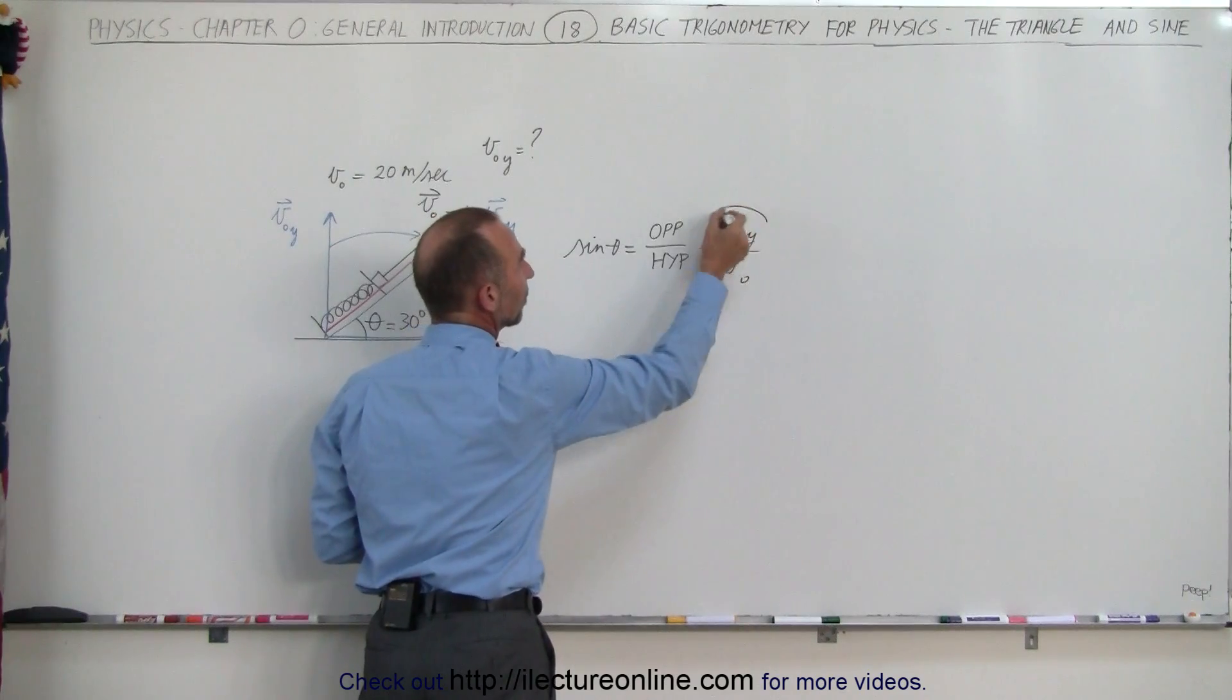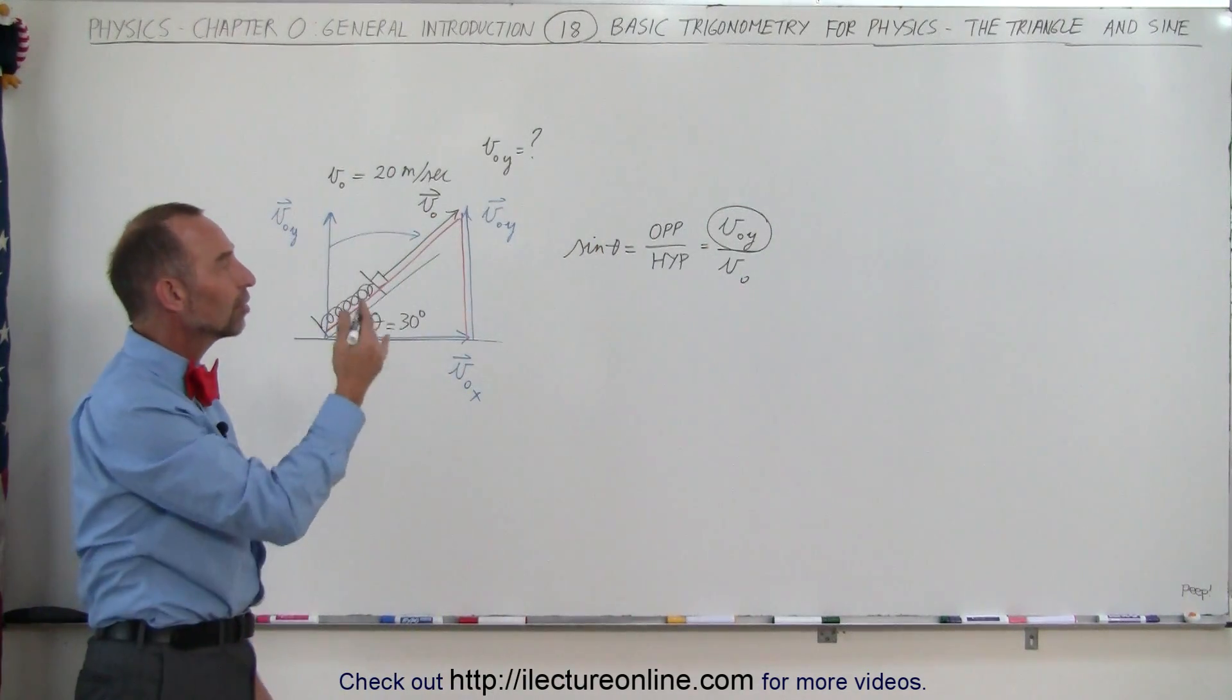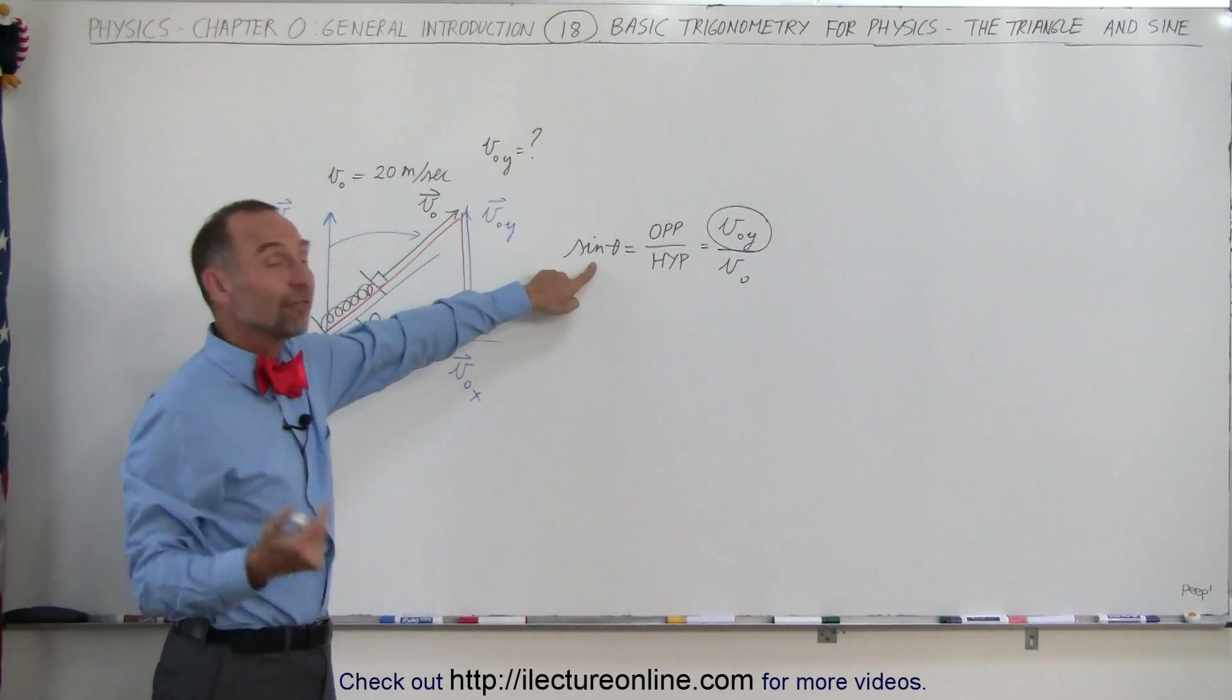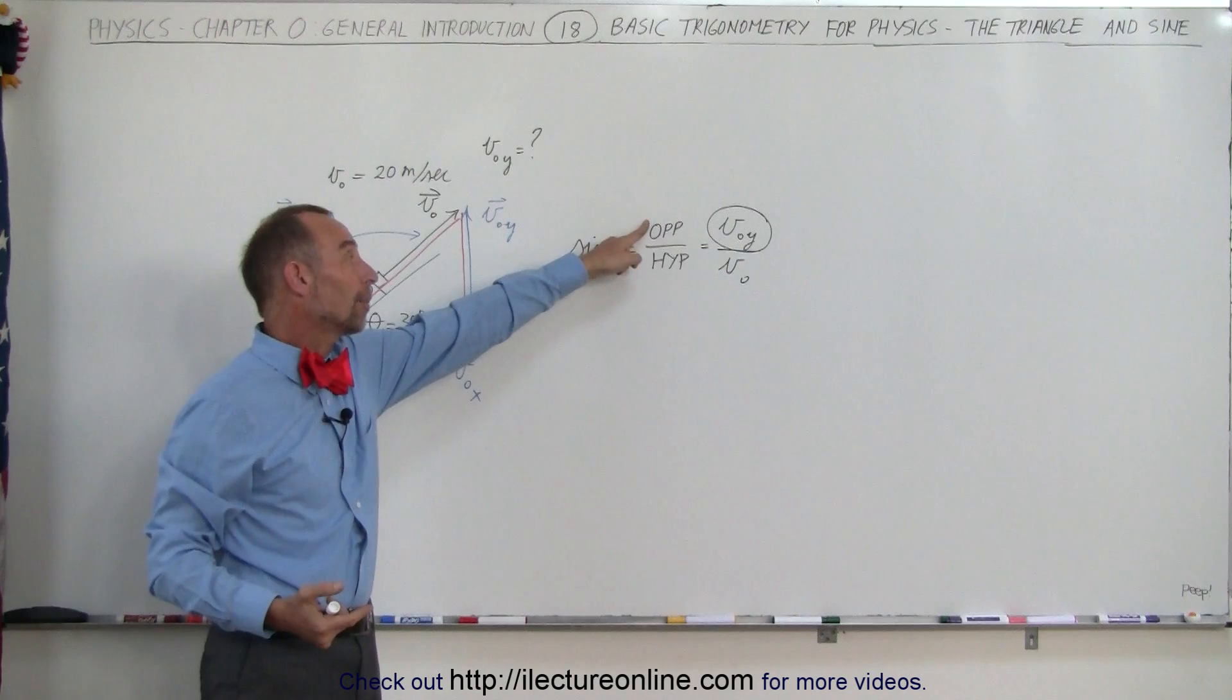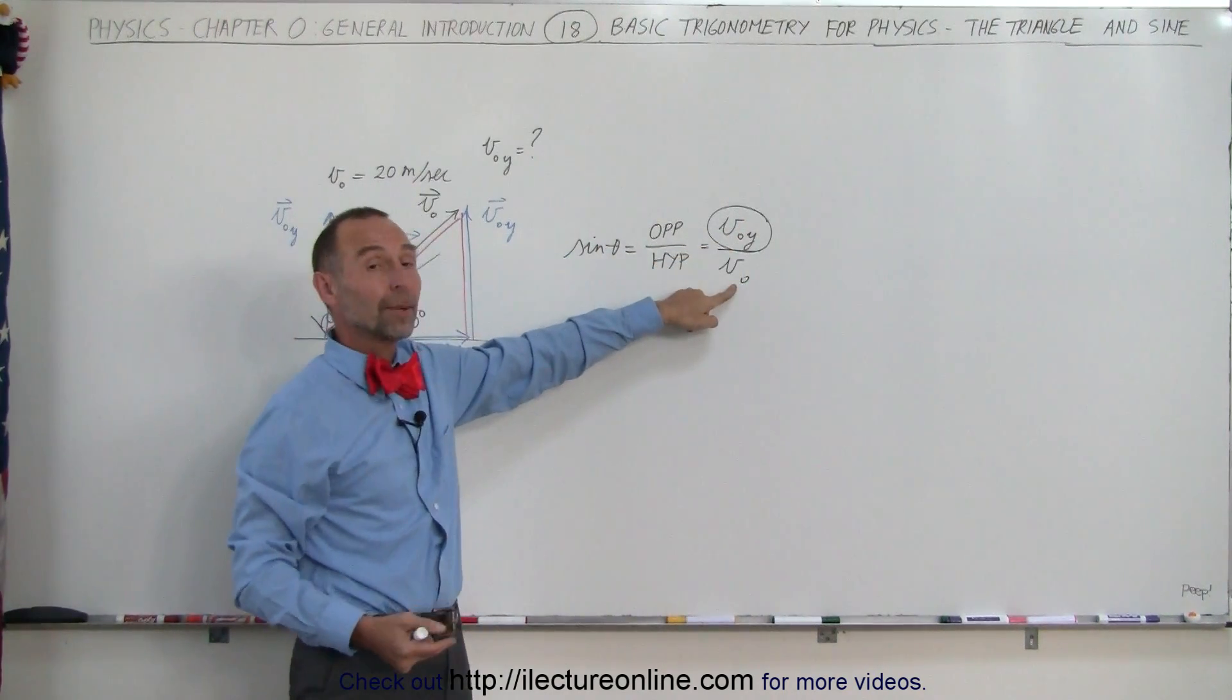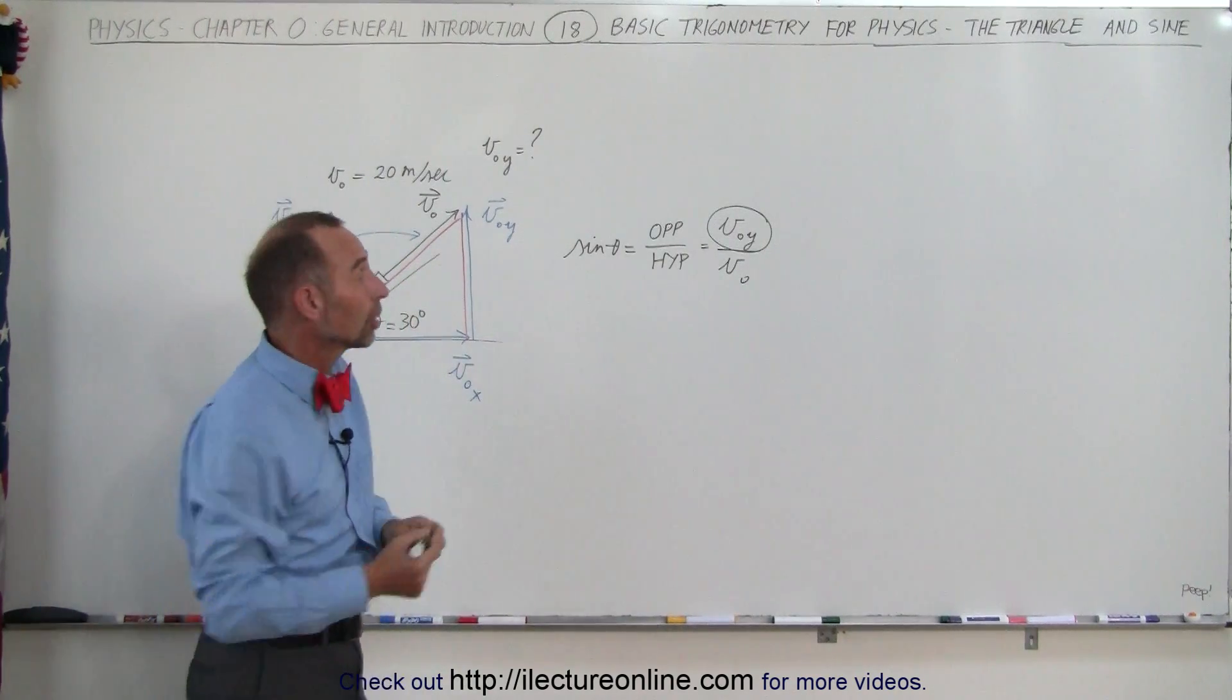And since we're looking for the magnitude of that component right there, then we simply have to algebraically solve for that. So that's how we set it up. You write down the definition of the sine. It's the opposite side divided by the hypotenuse. Then you recognize what the opposite side is. You recognize what the hypotenuse is. And then you algebraically solve for the item that you're looking for.